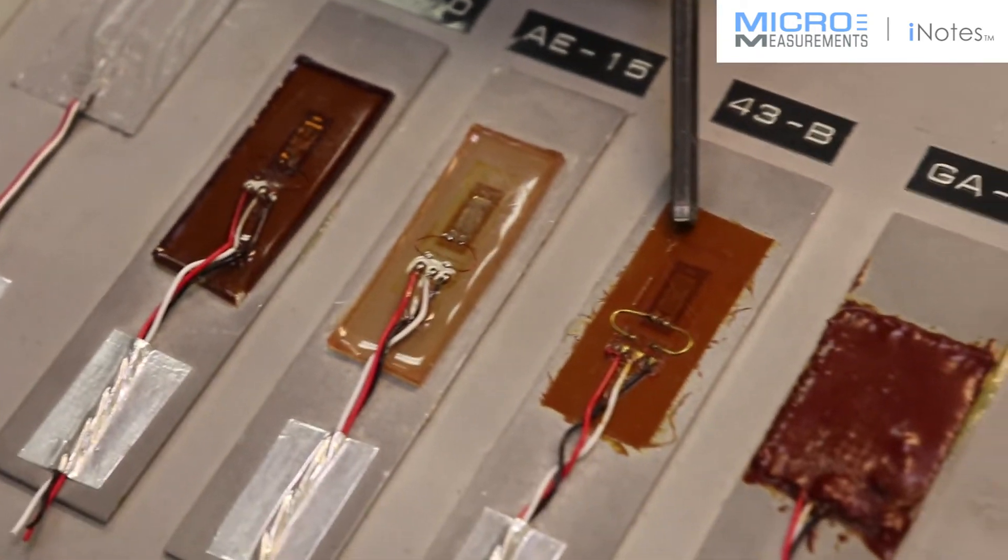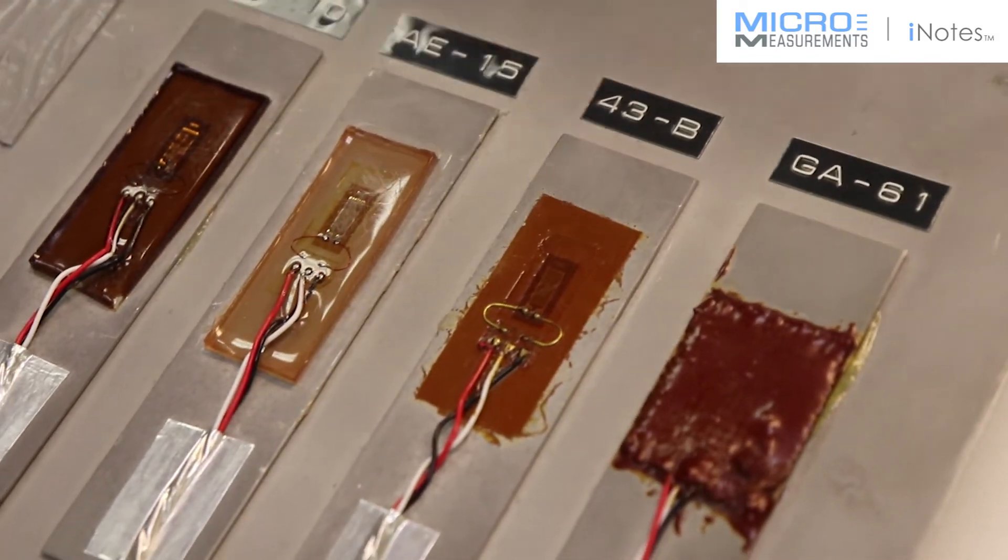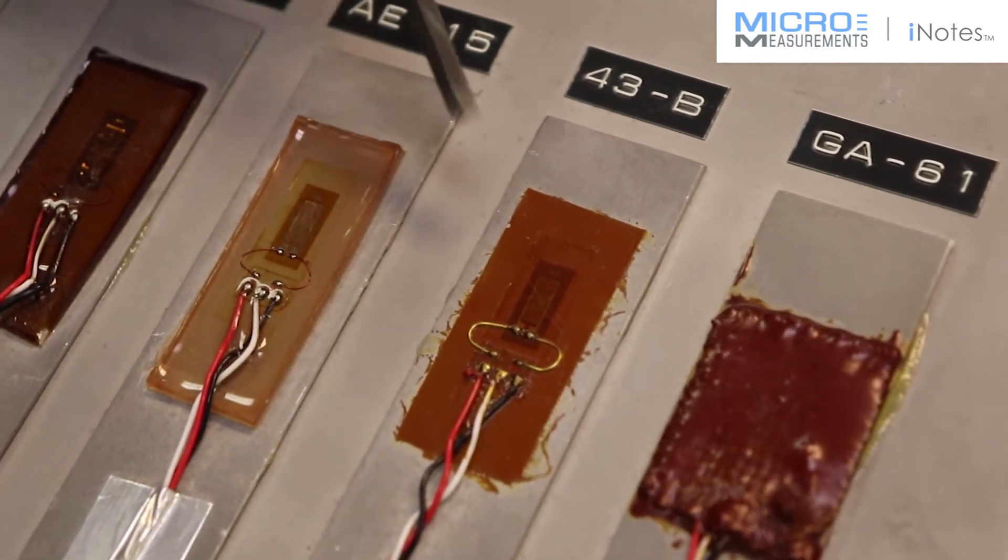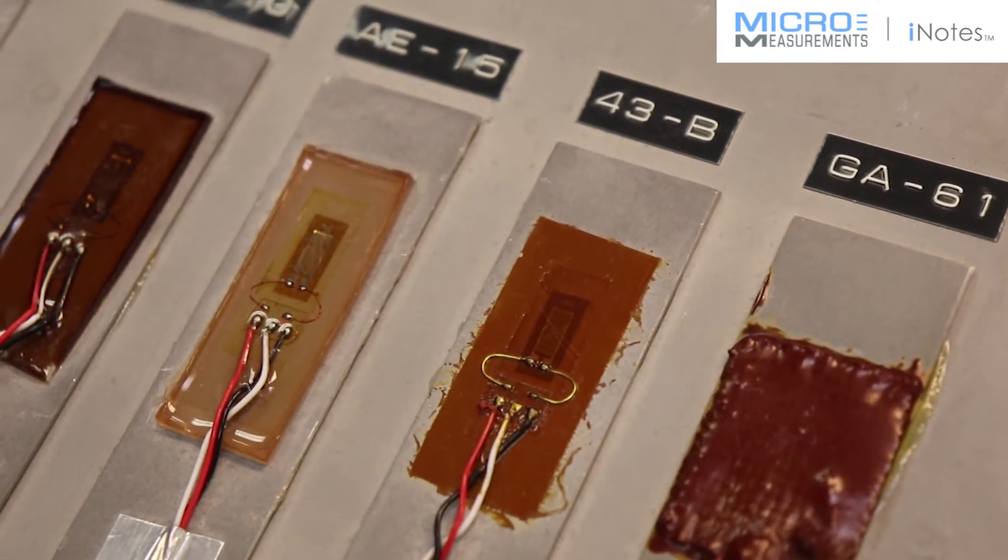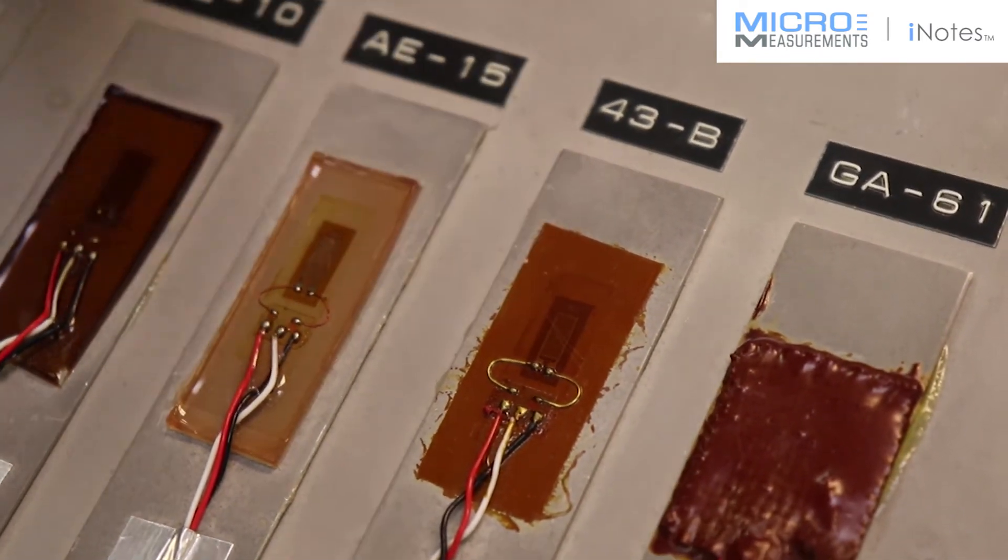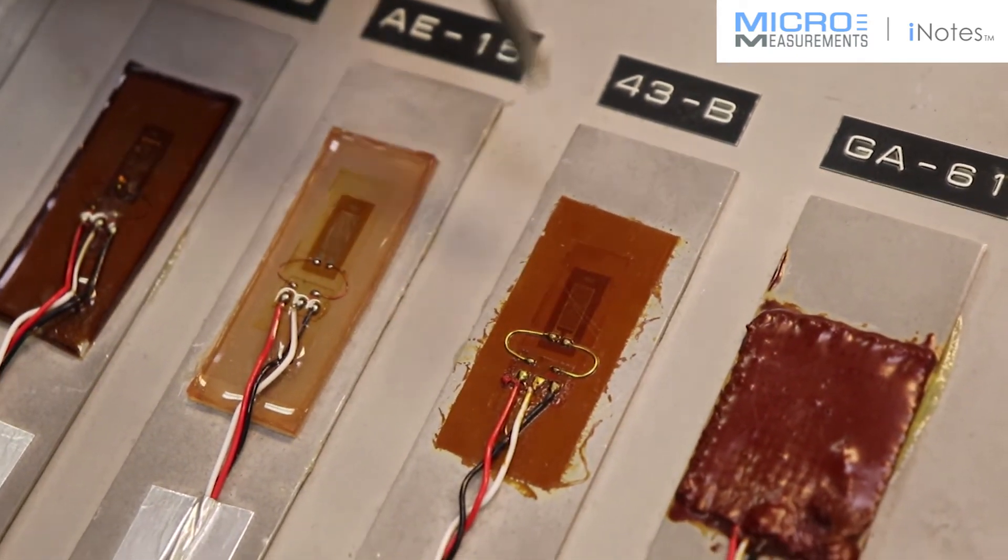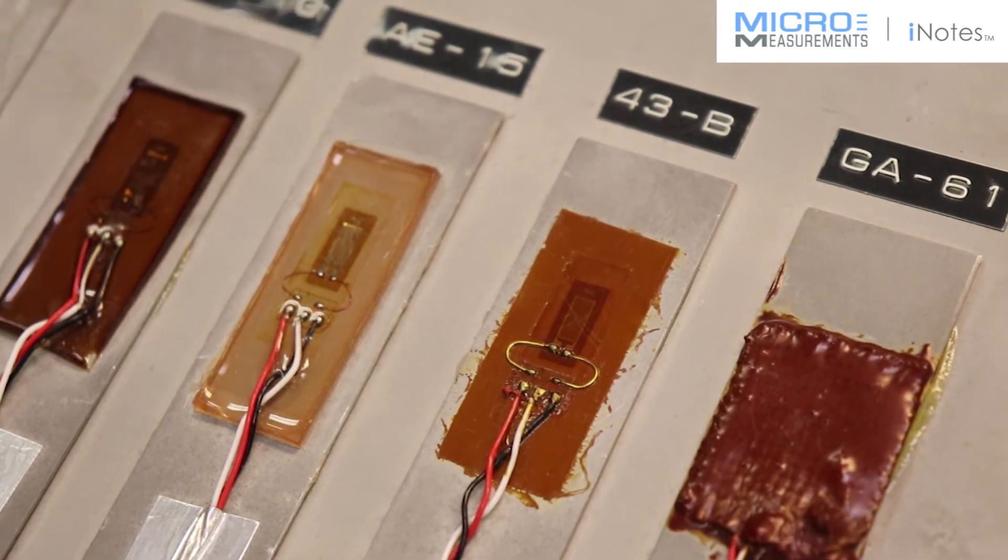The next one is 43B. This is an epoxy phenolic adhesive system that has a filler in it, a little bit of colloidal clay. And this is used typically in deep cryogenic applications. Where you have a deep cryogenic test, you want to have a fairly thin environmental protection that's not going to disrupt or crack when you go to those temperatures.